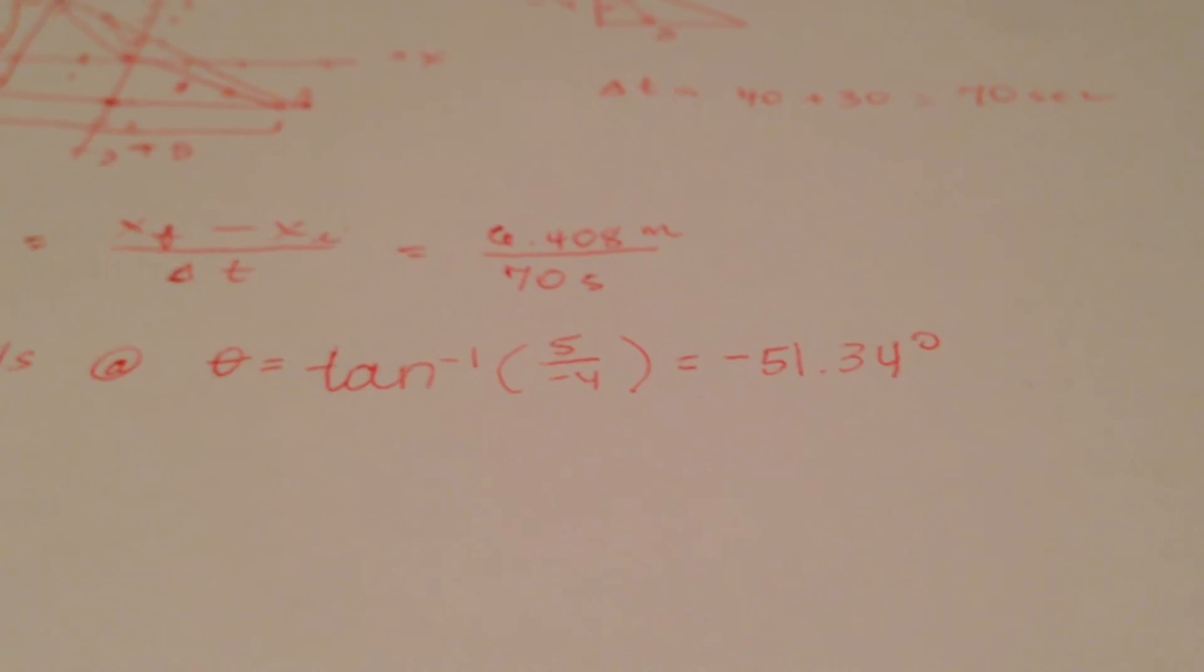So that means if we relocated the origin to the starting point at 0, 0, we would know that it would be negative 51.34 degrees below the positive x hat direction.